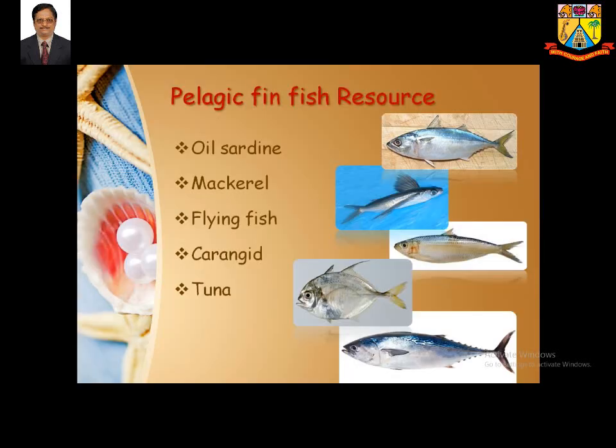Among pelagic finfish resources, the important one is the oil sardine, with the scientific name Sardinella longiceps, which is found abundantly throughout the year on both the west and east coasts of India. We can extract oil from it, and it is also used for salt fish and dried fish products.